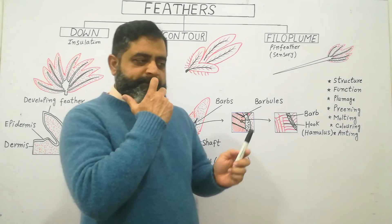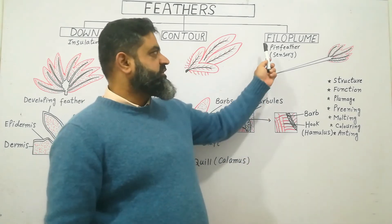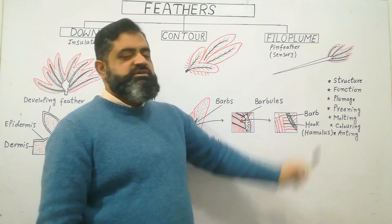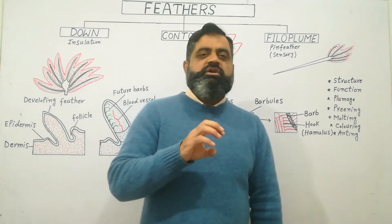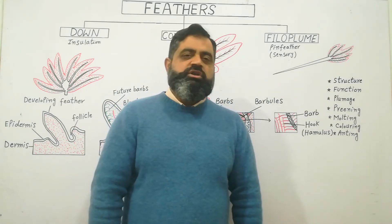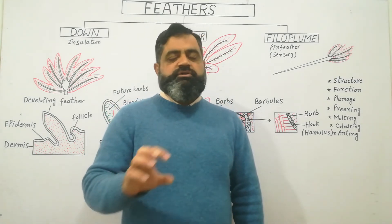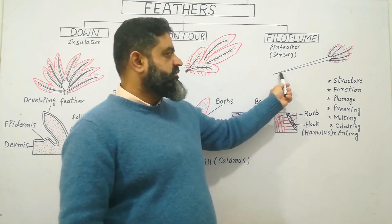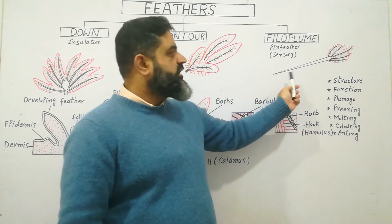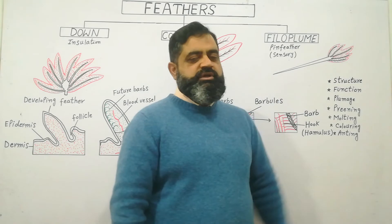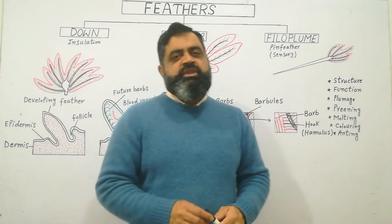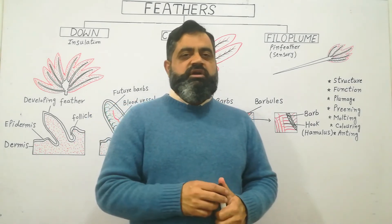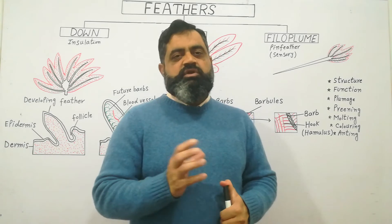The third type of feathers are known as filoplume feathers, also called pin feathers. These are located at different positions on the body. They have a narrow shaft like a needle with a small wider portion at the terminal end. These feathers are usually sensory and detect different kinds of stimuli coming from the environment.